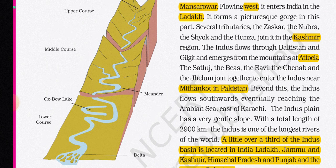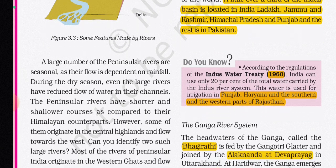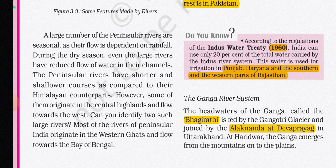These rivers form meanders, oxbow lakes, and many other depositional features in their floodplains, and also have well-developed deltas. Note that meanders are related to the middle course, while oxbow lakes are also related to the middle course — don't confuse the two. Oxbow lakes are closely related to meanders.